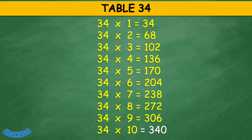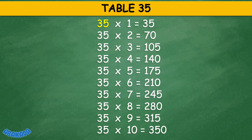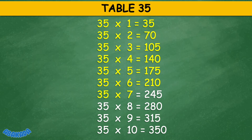Table 35: 35 times 1 equals 35, 35 times 2 equals 70, 35 times 3 equals 105, 35 times 4 equals 140, 35 times 5 equals 175, 35 times 6 equals 210, 35 times 7 equals 245, 35 times 8 equals 280, 35 times 9 equals 315, 35 times 10 equals 350.